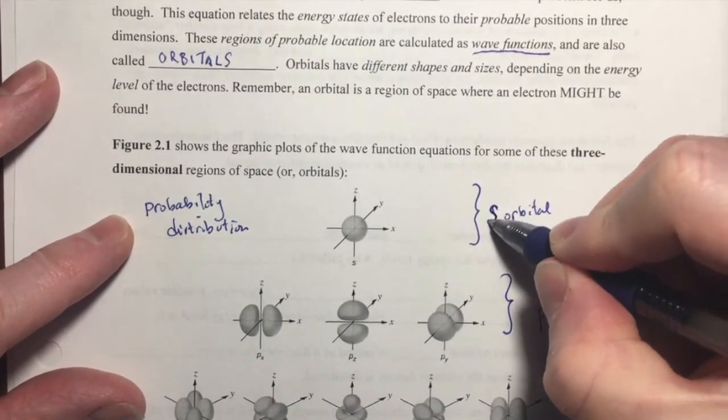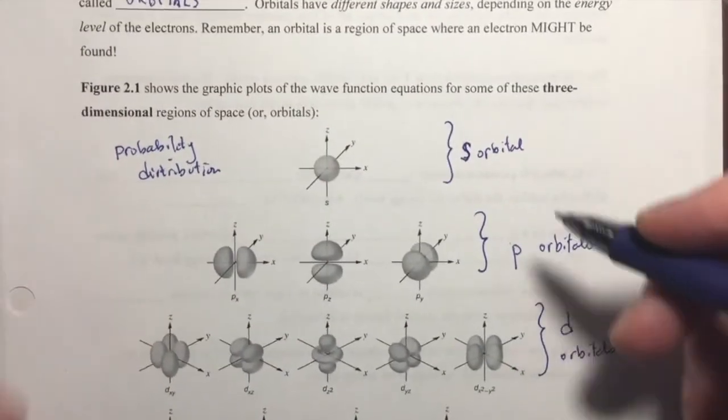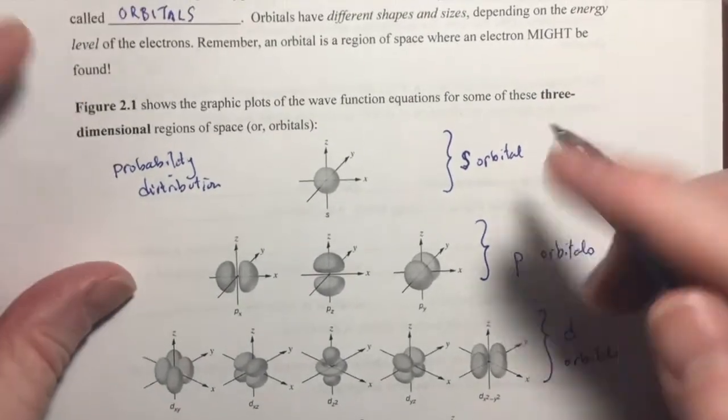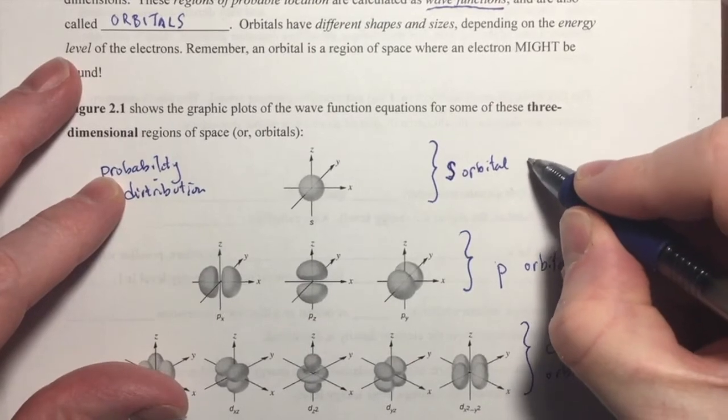So, I mentioned that there are s orbitals, there are p orbitals, there are d orbitals, and there are f orbitals. And I want to note that s orbitals, there's one s orbital, and it is shaped like a sphere.